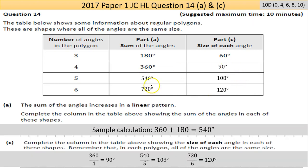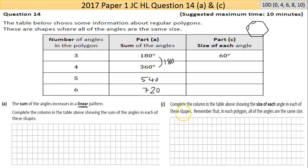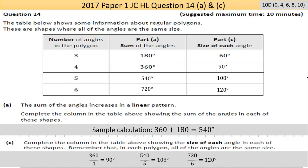Now Part C. We'll do that now and we'll come back to Part B. Complete the column in the table above showing the size of each angle in each of these shapes. Remember that in each polygon, all of the angles are the same size. So Part C, be very careful to read well. I was getting stuck there for a second by not reading it.